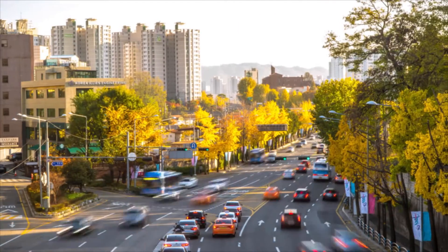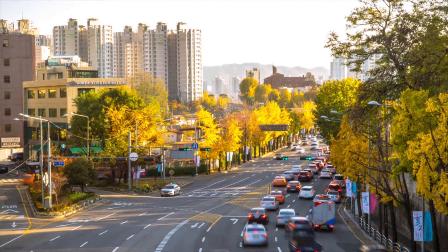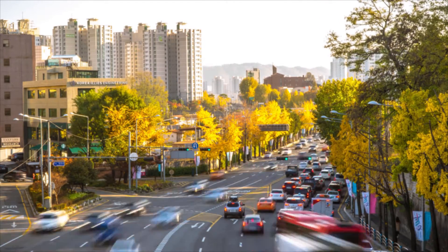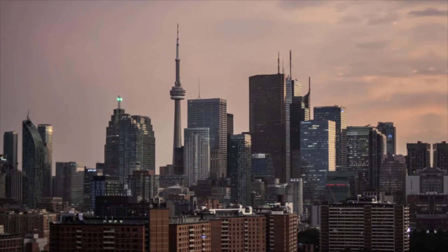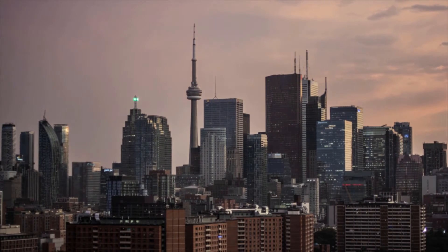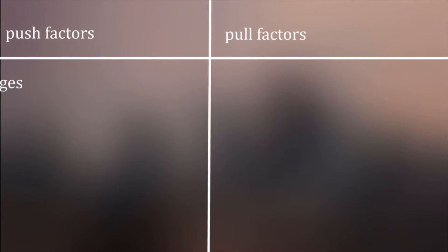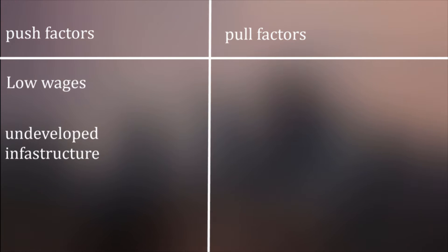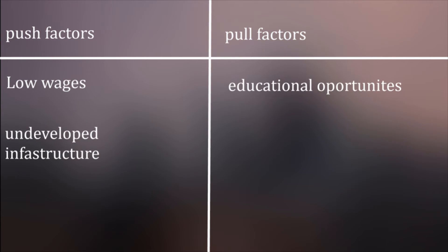There are several reasons affecting urbanization. For example, migration from rural to urban areas caused by push factors such as low wages and undeveloped infrastructure, and pull factors such as educational and job opportunities. But do cities grow and develop similarly to each other? And is there a common model to represent them?